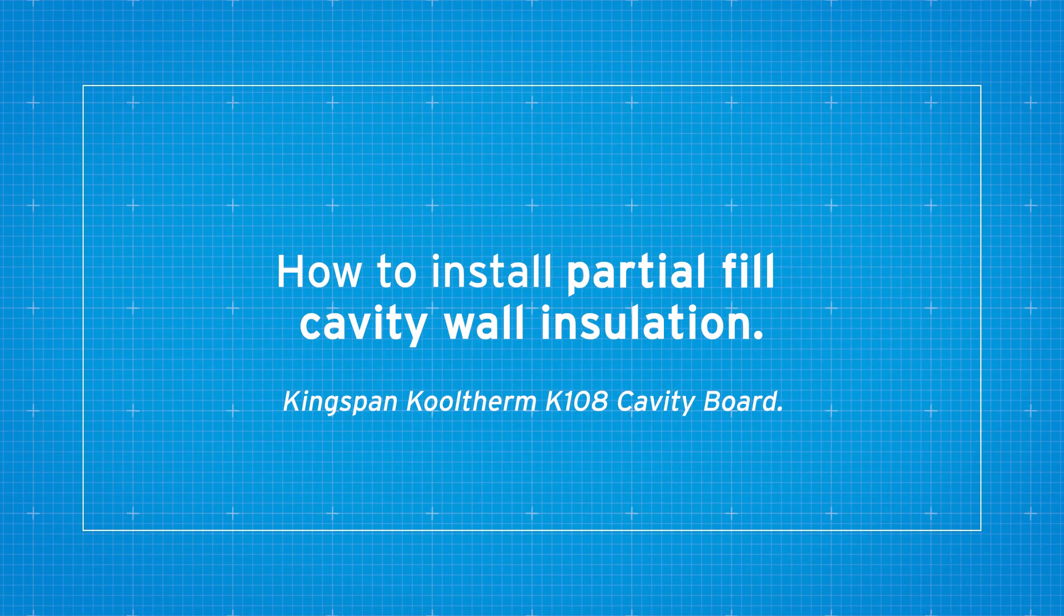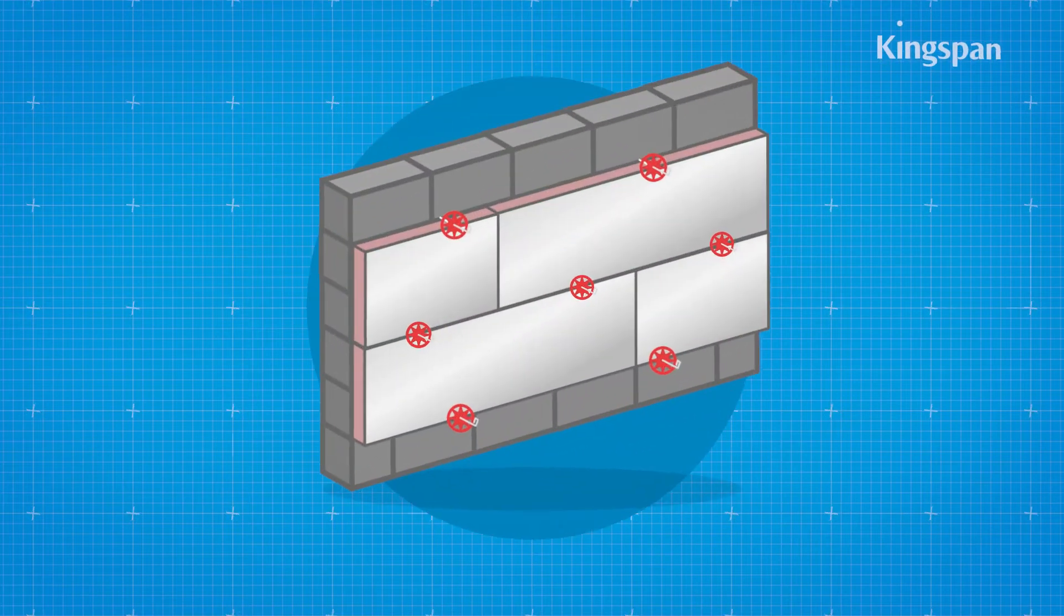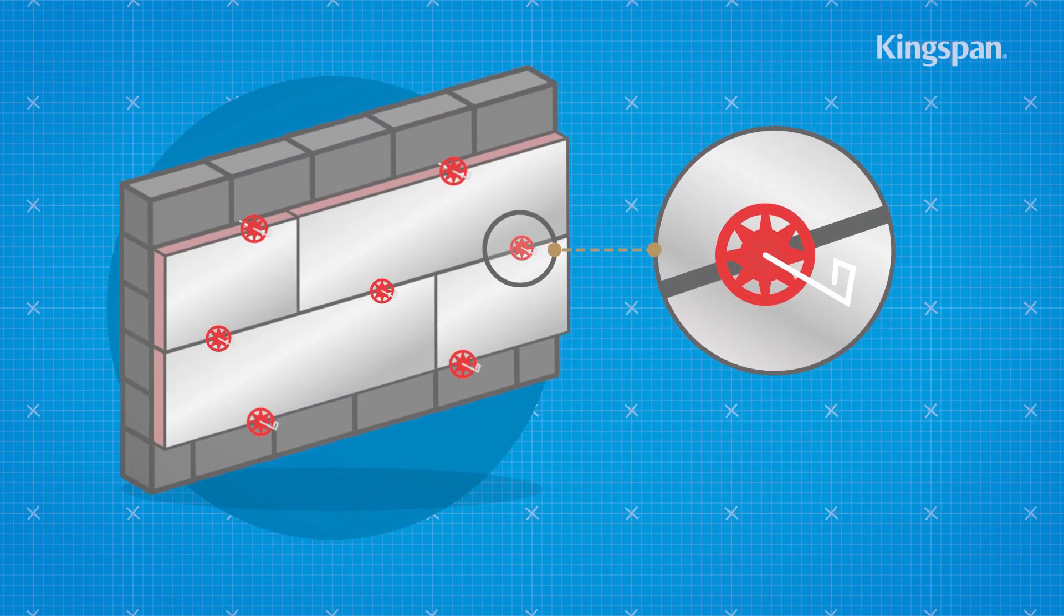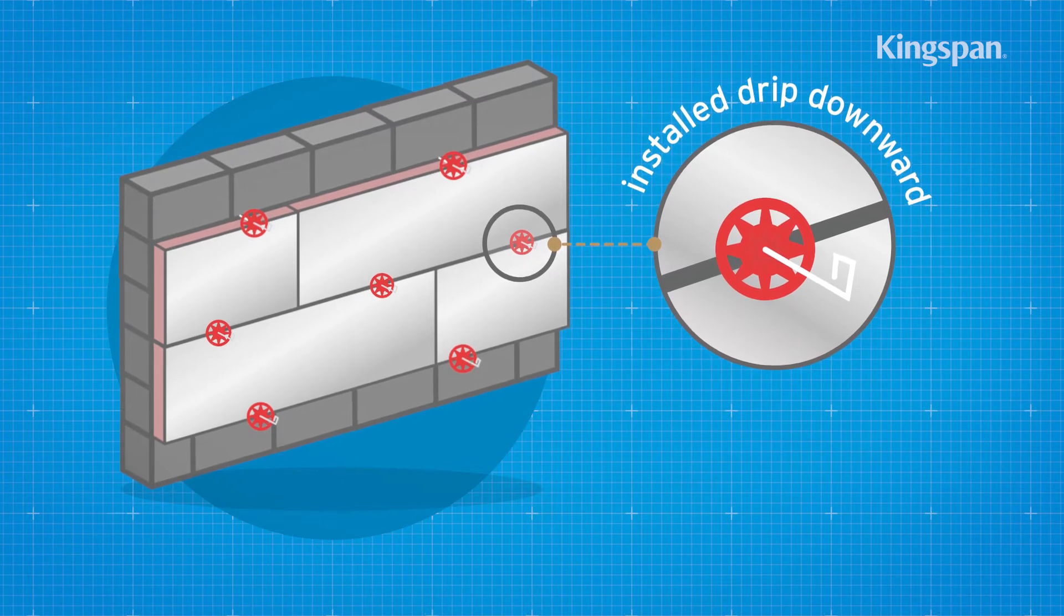How to Install Partial Fill Cavity Wall Insulation. Cavity wall insulation is normally held in position by the wall ties used to tie the two skins of masonry together.